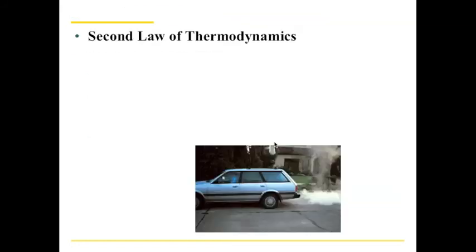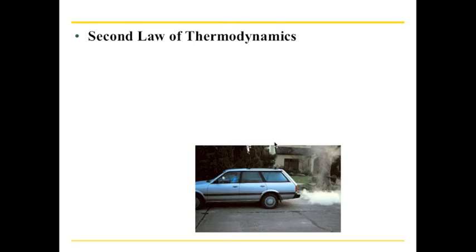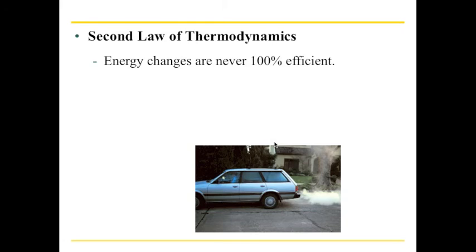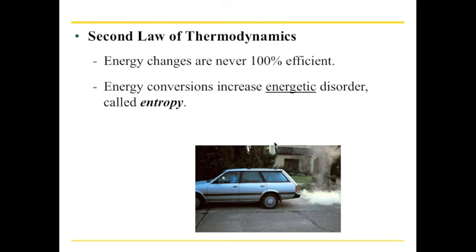There's also a second law of thermodynamics. The second law states that energy changes are never 100% efficient. We are able to convert energy from one type to another, but as we do, some energy is always going to be lost to the environment. This energy conversion that creates energetic disorder is called entropy — energy is never perfectly conserved.